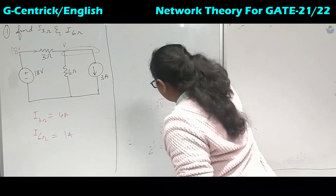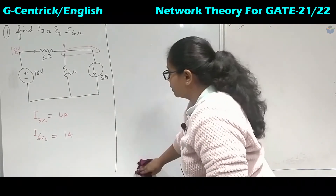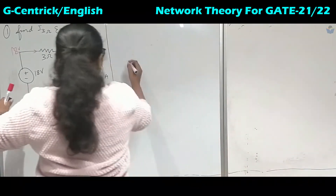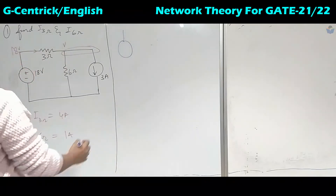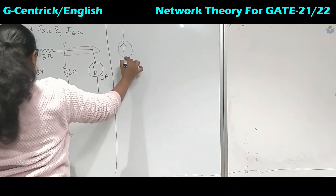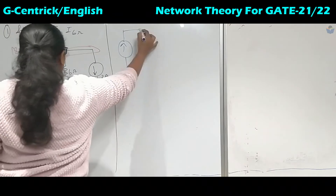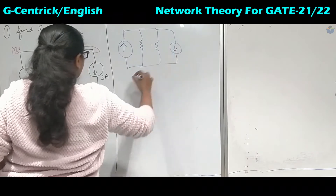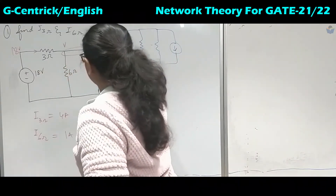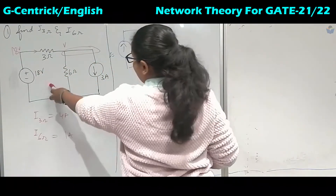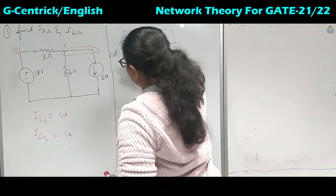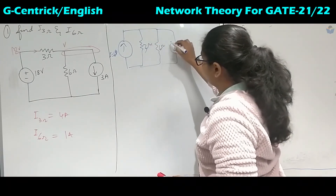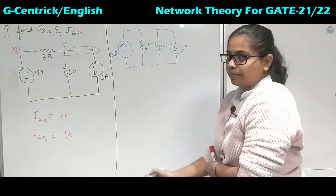Now we apply source transformation to solve the same problem. First, convert the 18 V voltage source (with 3 Ω in series) into a current source. The current source arrow points upward, the resistor is now in parallel, and I = V / R = 18 / 3 = 6 amperes. We now have a 6 Ω resistor, a 3 Ω resistor in parallel, and a 3 A current source also in the circuit.